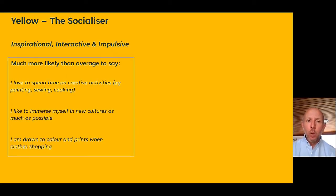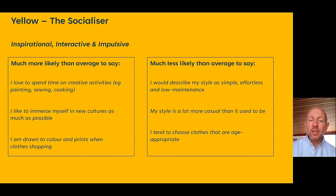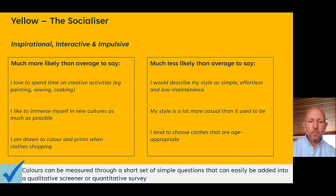And lastly our yellows — who we were hoping would be inspirational, interactive, and impulsive — said they like to spend time on creative activities, immerse themselves in new cultures, and are drawn to colours and prints. They were the least likely to say their style is simple or casual, or that they choose clothes that are age-appropriate. The short answer is our hypothesis that this colours model would bring to life hidden personalities within the survey data was absolutely accurate. These colours can be measured through a very short couple of questions easily applied to any existing quantitative questionnaire.